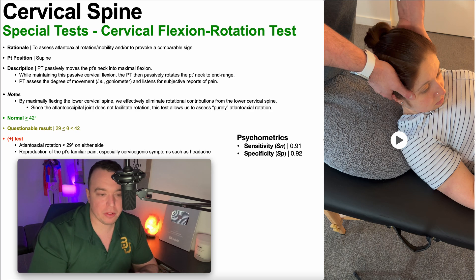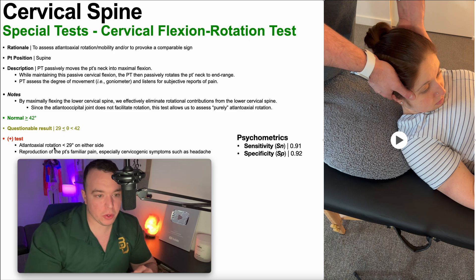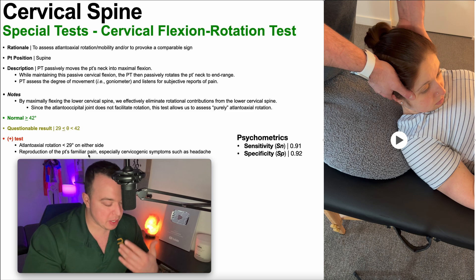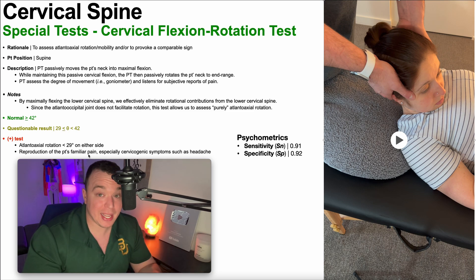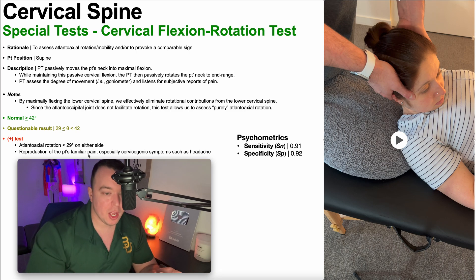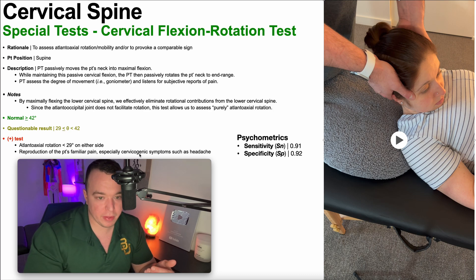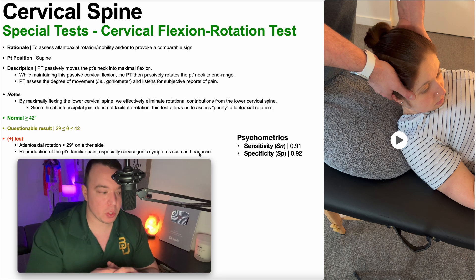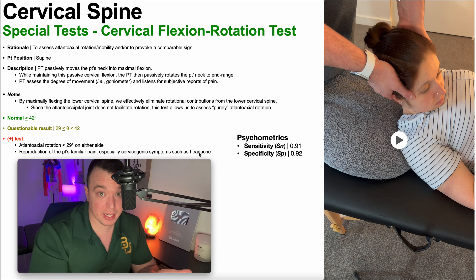Now, the other thing that this might do is it might reproduce the patient's familiar pain. That pain could just be neck pain — it could be upper cervical spine pain. And if that's the case, well, then we know it's an atlanoaxial restriction on the right. But it also may reproduce cervicogenic symptoms such as headache. It could also reproduce some dizziness as well.